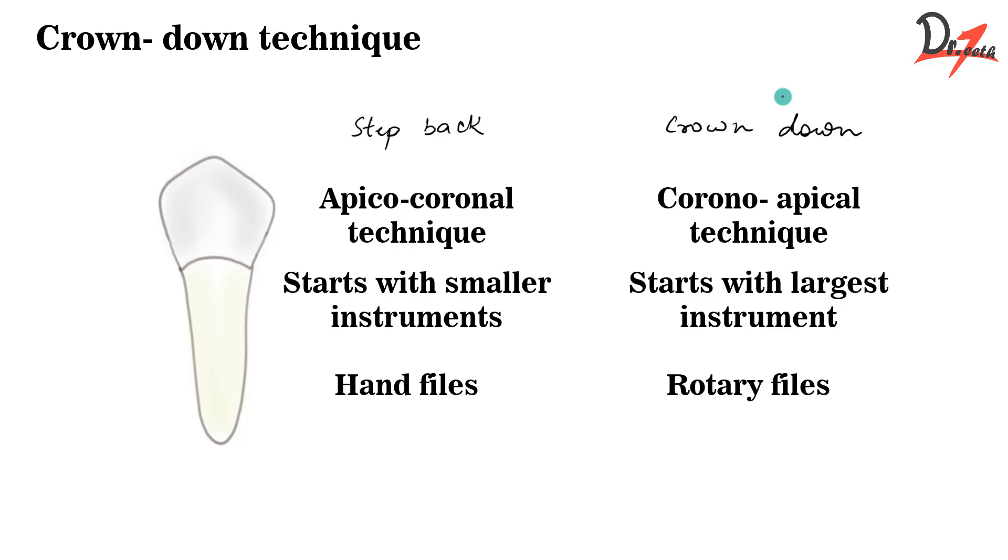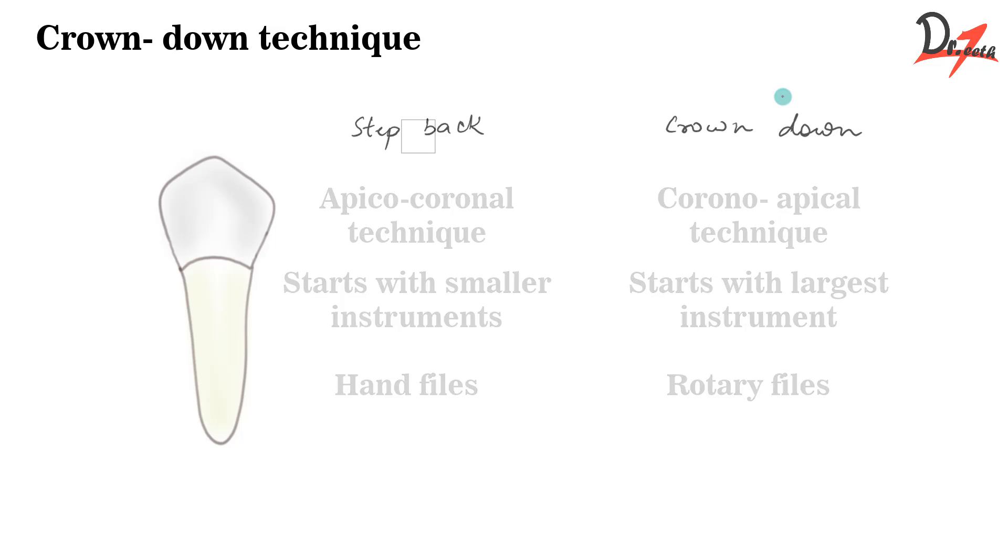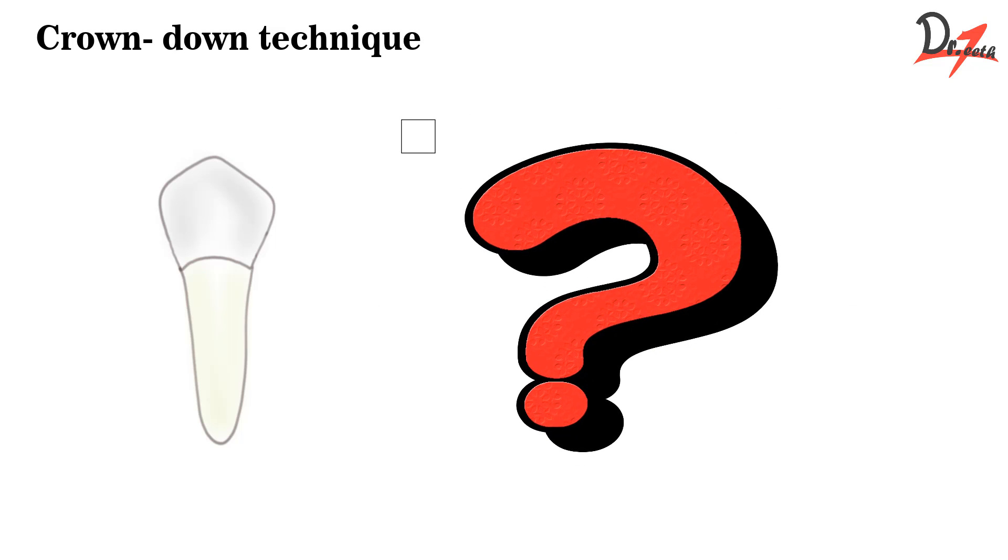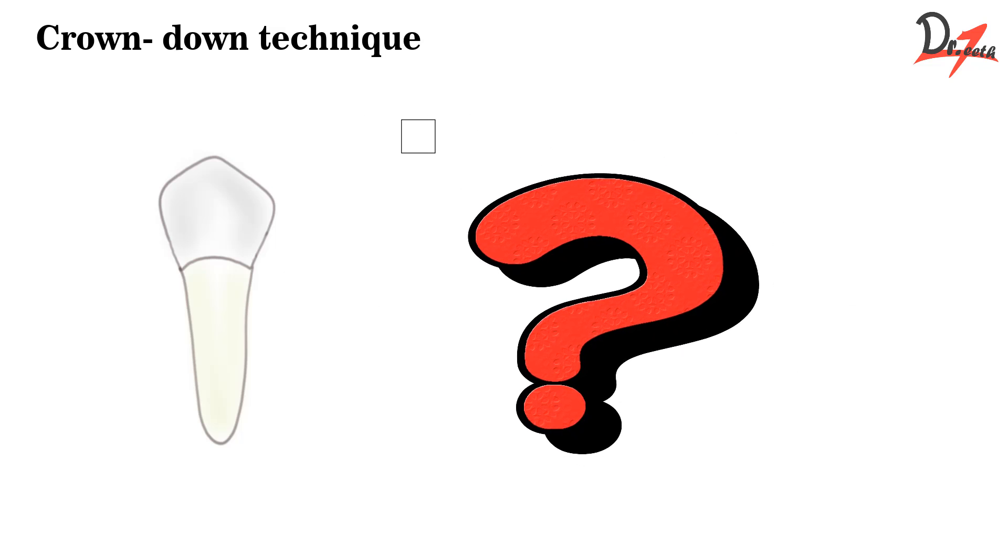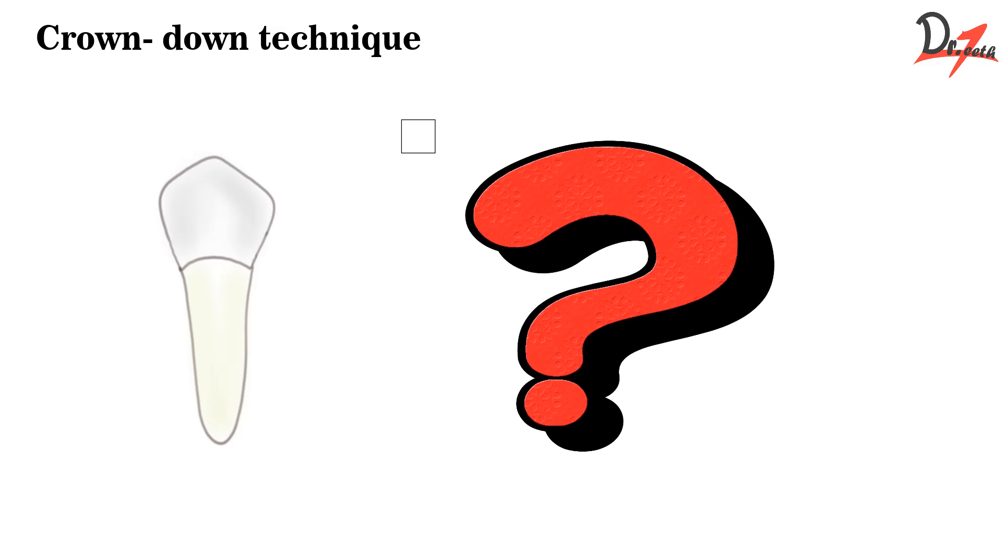Now let us proceed to the step back technique, how we actually do it. Now one question that must be coming in your mind: why do we need to have so many techniques? Why not just stick to the step back technique? Why have the crown down technique? Moreover, because we know that crown down technique has been introduced recently, there must be some kind of flaw in the step back technique, right? So that we needed the crown down.